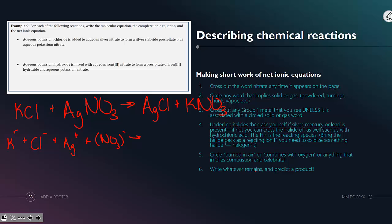Silver chloride, however, is insoluble. It says in the problem itself that it is a precipitate, so we will not separate it. And potassium and nitrates are always soluble, so we will show them separated as well. So this is our complete ionic equation.